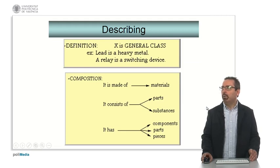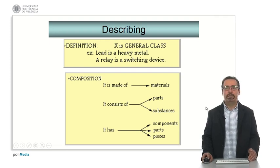So, we normally start with a definition, for example, lead is a heavy metal, a relay is a switching device. And then we can state the composition, for example, typically with made of, consists of, or it has different components, parts, or pieces. These are typical structures.